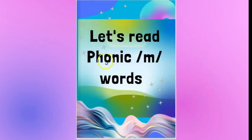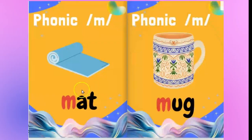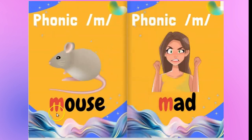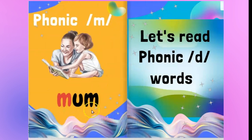Let's read phonic ee words. Mat. Mug. Mouse. Mad. Mum.